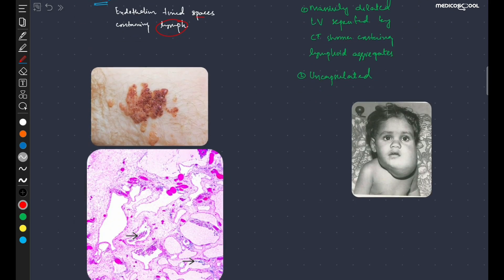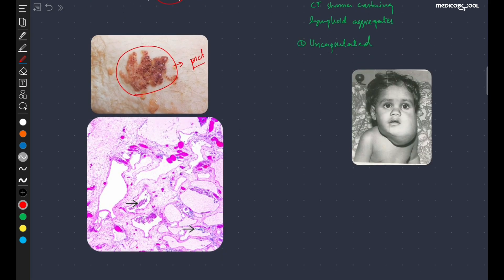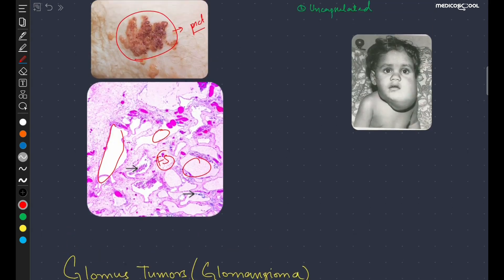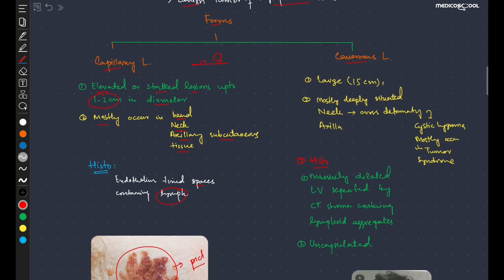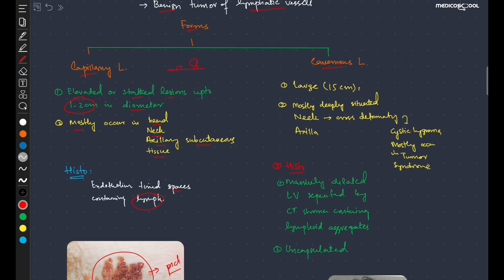This is the gross picture of lymphangioma. In the second slide you can see large spaces lined by endothelial cells, and in between these spaces is present the fibrous stroma. Now coming towards the cavernous lymphangioma, it is large as compared to the capillary lymphangioma.